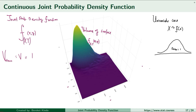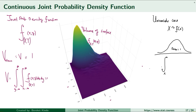Calculus gives us a great way to calculate the volume under a surface — using integrals. The double integral with respect to both variables x and y of the joint probability density function f(x, y) dx dy equals one. This is analogous to the univariate case, where the integral of f(x) dx equals one, representing the area under the curve.